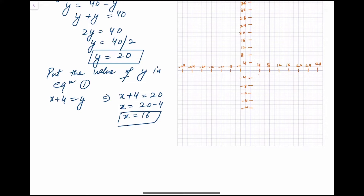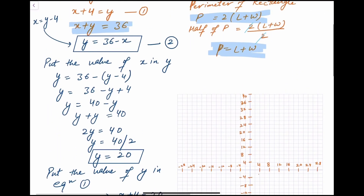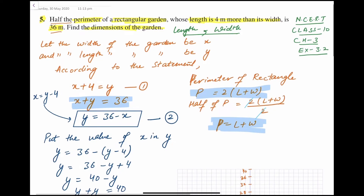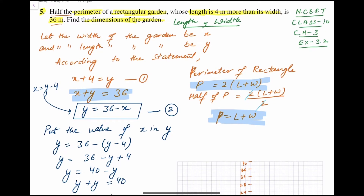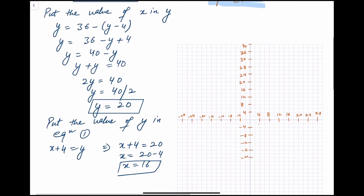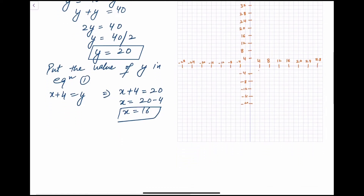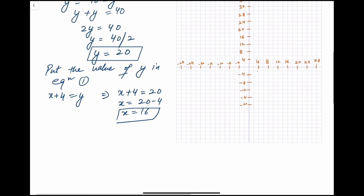So x = 16 and y = 20. You can also find this value graphically. The question was: half the perimeter of a rectangular garden whose length is 4 meters more than its width is 36 meters — find the dimensions of the garden. This way using substitution method is done.